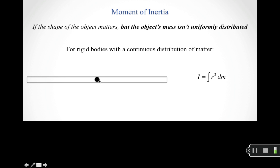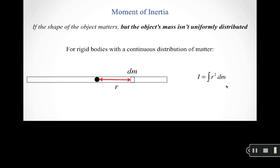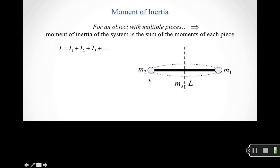Another variation is when an object has a non-uniform mass distribution. In this case, we turn the sum over point particles into an integral: I = ∫ r² dm, where dm is a small mass element at distance r from the axis of rotation. This integral approach handles continuous, non-uniform mass distributions.